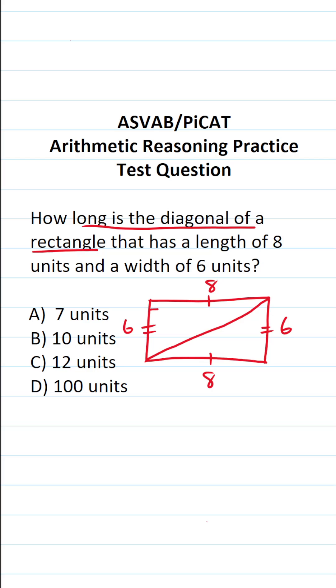Now, when you put a diagonal on a rectangle, what you create, as you can see, are two identical right triangles. And if it's easier to see, let me go ahead and break this apart so you can see one of the right triangles more clearly.